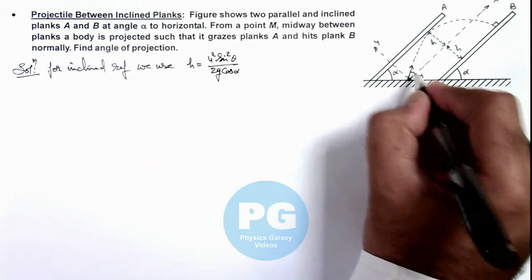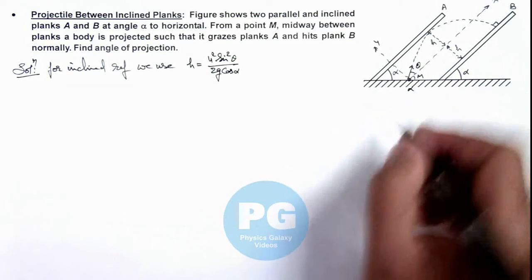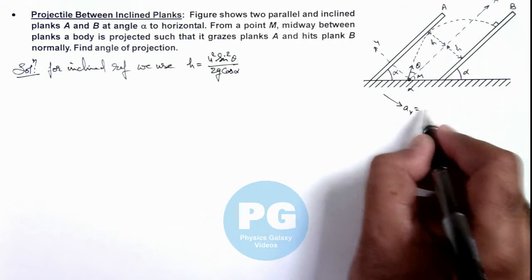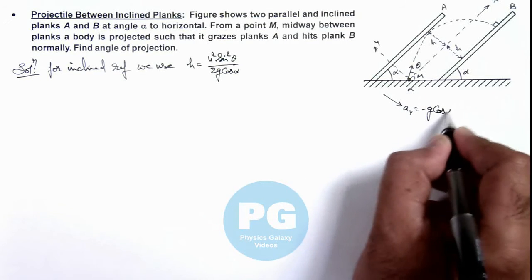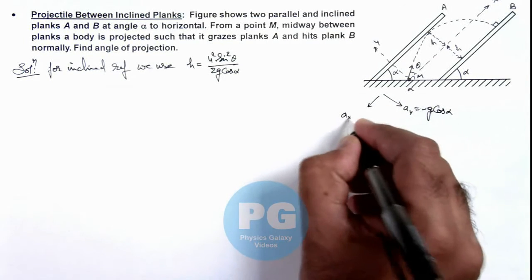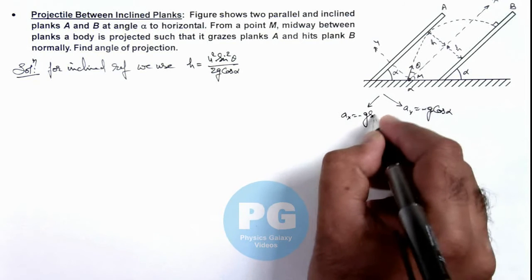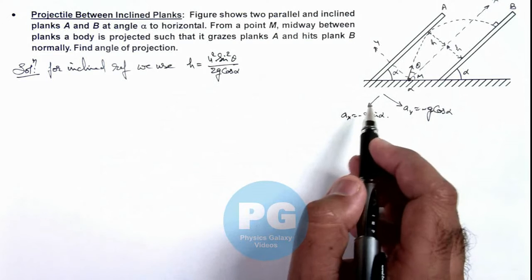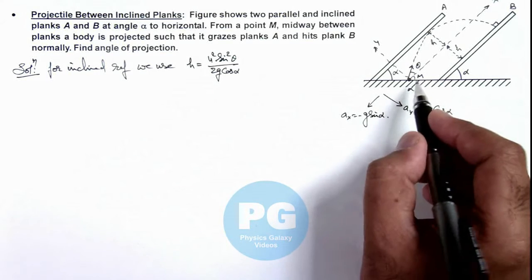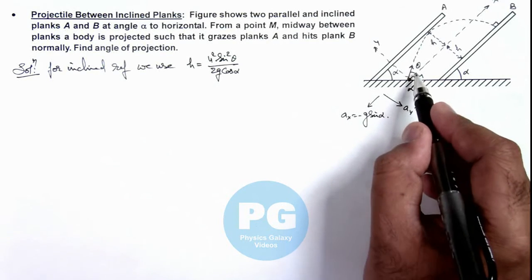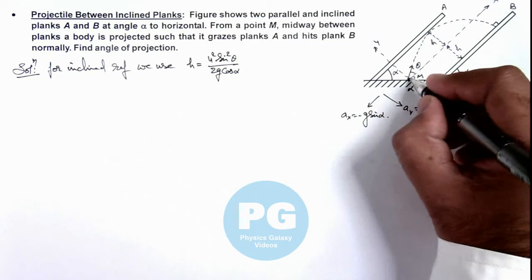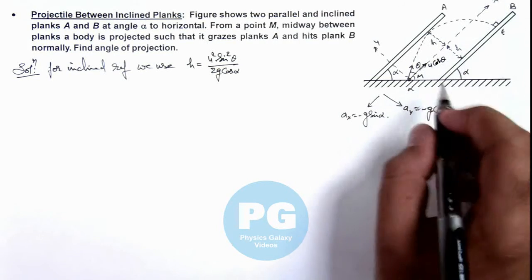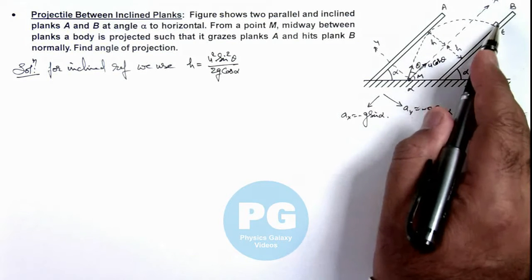Since this angle is theta and the incline angle is alpha, in the y-direction the acceleration can be written as minus g·cos(α), and in the x-direction the acceleration will be minus g·sin(α). The body is thrown with an initial speed u·cos(θ) in the x-direction.